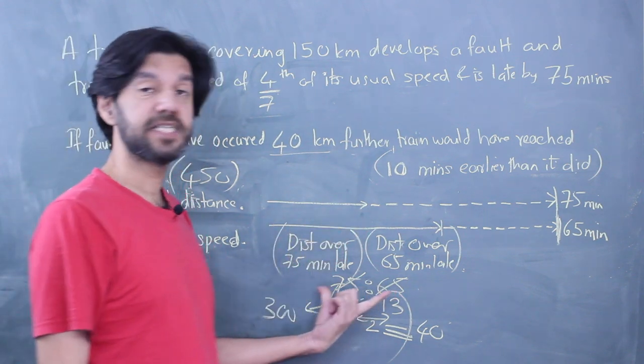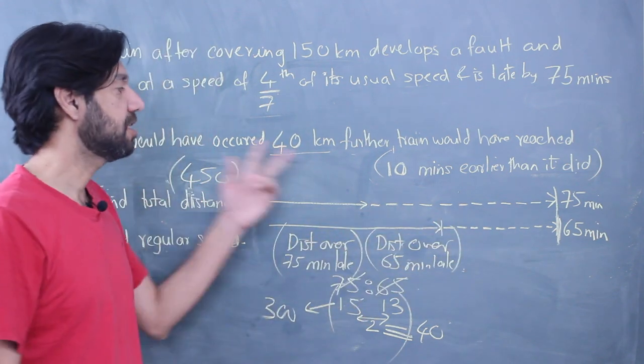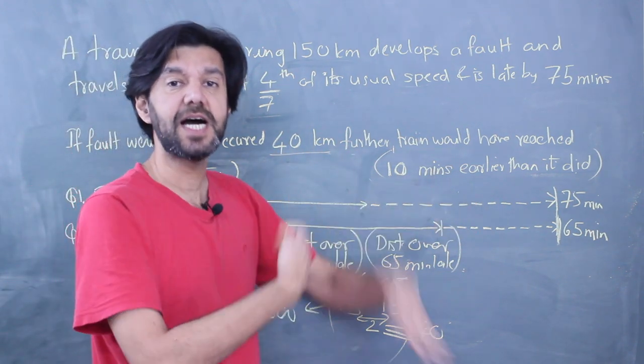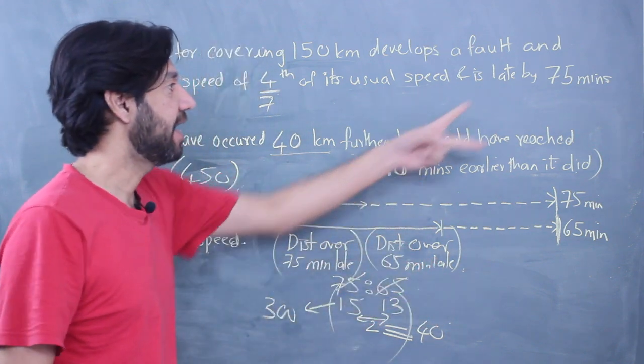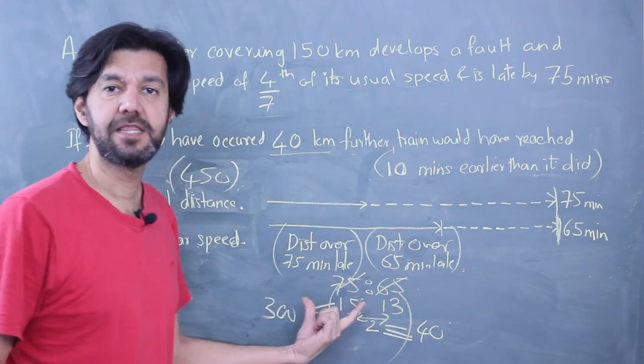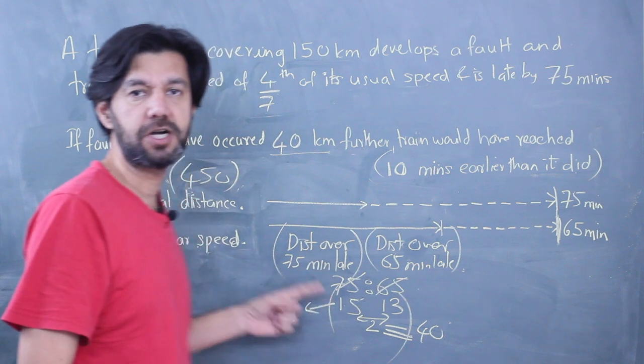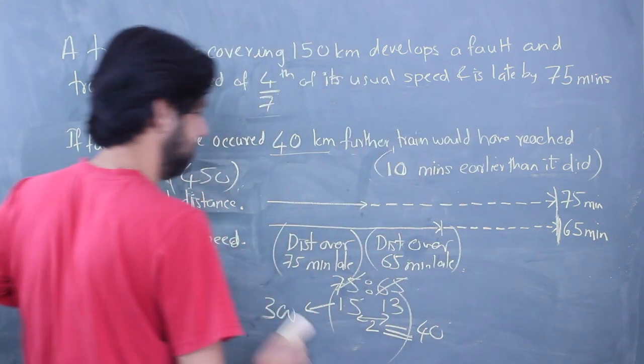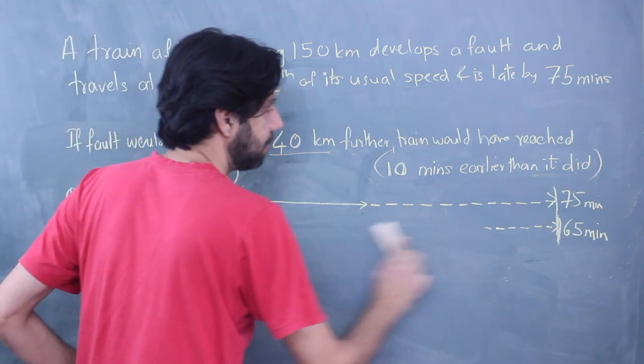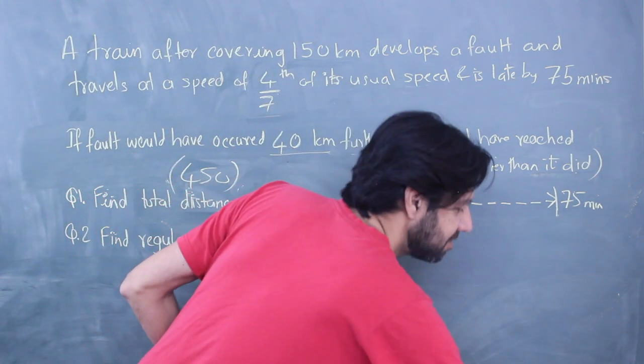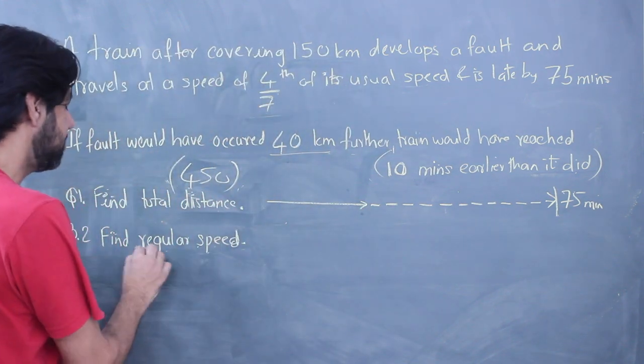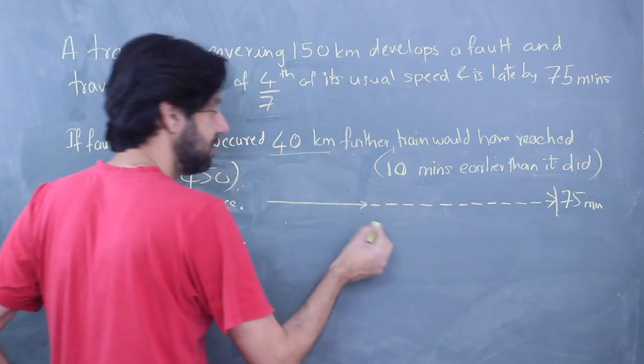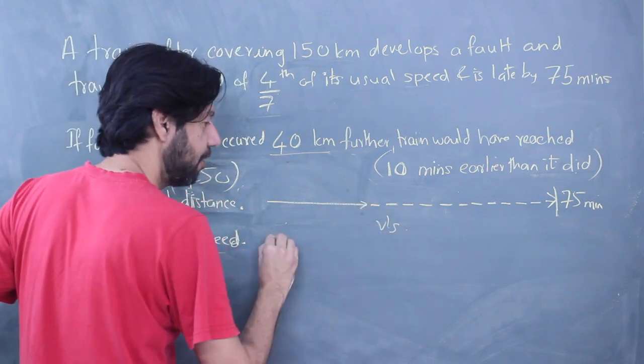To explain I had to write all this, but you could just do it mentally. This 40 kilometers is the difference. 75, 65 becomes 15, 13. The difference is 2, so multiply by 20. 15 times 20 is 300. If the question is to find the regular speed, now that you know the distance, we are comparing this with going non-stop.